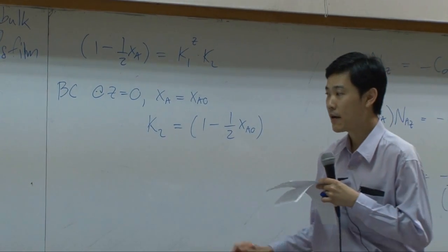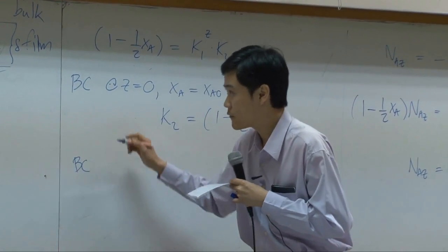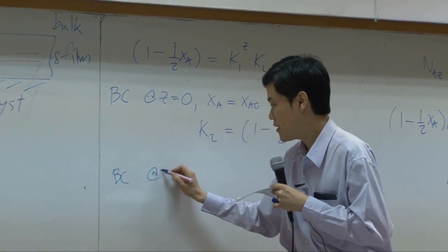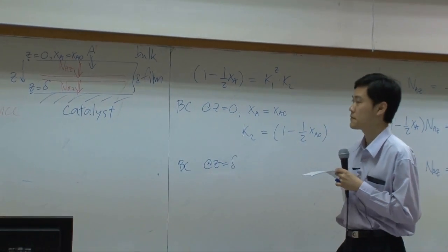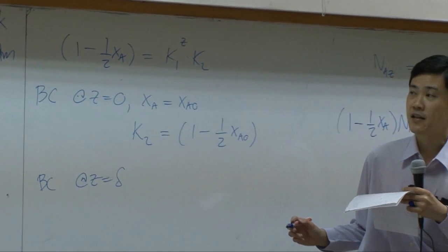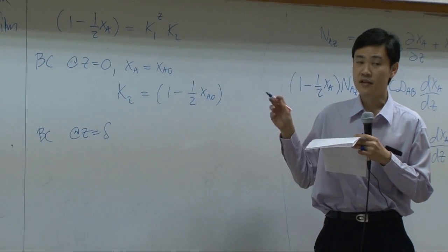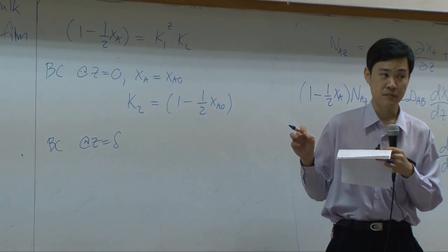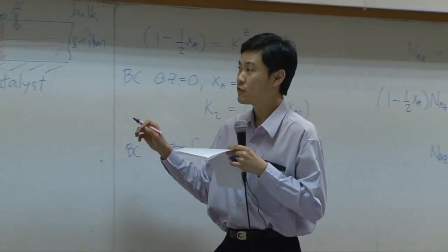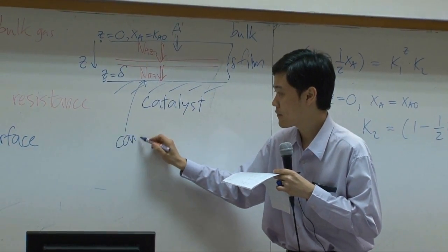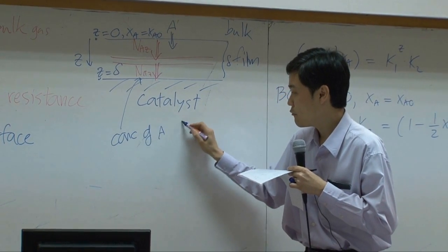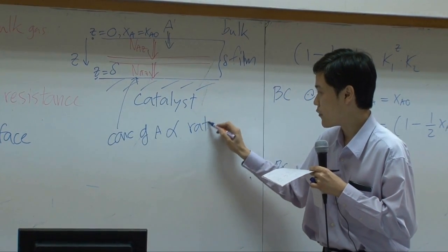The second boundary would come from the surface of the catalyst itself at Z equal to delta. What do we have at this part? Now, it depends on the rate of reaction. Because concentration of A at this point really depends on rate of reaction.